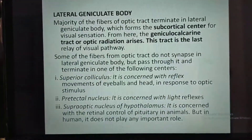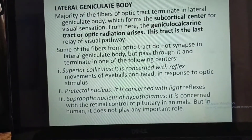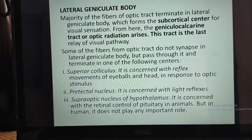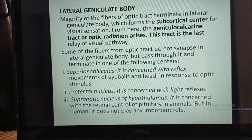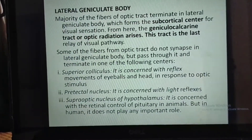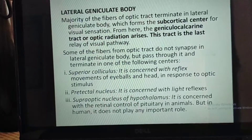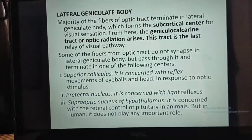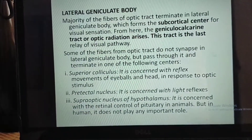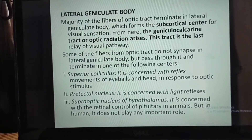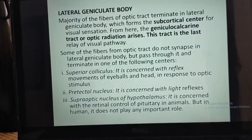The majority of fibers of the optic tract terminate in the lateral geniculate body, which forms a subcortical center for visual sensation. From here, the geniculo-calcarine tract or optic radiation arises, which is the last relay of the visual pathway. Some fibers from the optic tract do not synapse in the lateral geniculate body but pass through it and terminate in other centers: the superior colliculus, concerned with reflex movement of the eyeball and head in response to optic stimulus; the pre-tectal nucleus, concerned with light reflexes; and the supra-optic nucleus of the hypothalamus, concerned with retinal control of the pituitary in animals, but not playing an important role in humans.